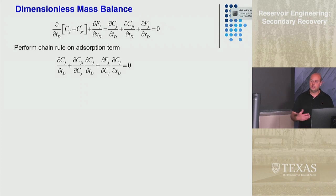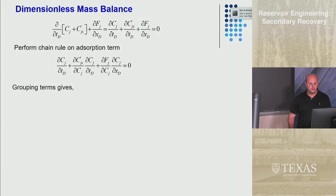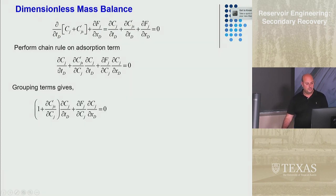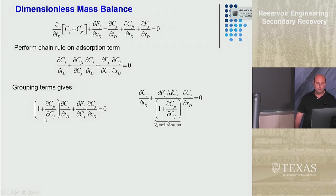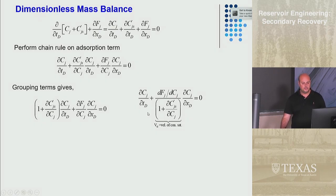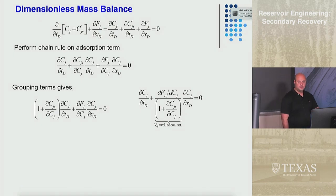Grouping like terms, both time-derivative terms are multiplied by the partial of CJ with respect to TD. Dividing through gives: partial of CJ with respect to TD plus a coefficient times the partial of CJ with respect to XD. This is similar to equations from Buckley-Leverett theory for multi-phase flow — a 1D advection equation where the coefficient is the velocity of a constant concentration, as a function of that concentration.